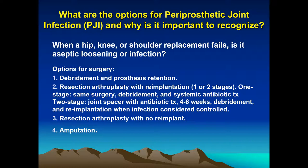A third option is resection arthroplasty with no re-implantation. A fourth, unfortunate option — typically reserved for cases completely resistant to antibiotic therapy or where multiple revisions have already been unsuccessful — is amputation.